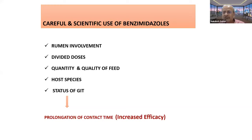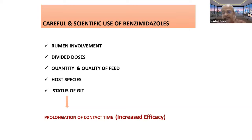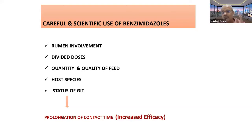Regarding host species: our natural tendency is to translate whatever is prescribed for sheep directly to goats. But in goats, hepatic activity is high and digestive transit time is less — ingesta moves faster compared to sheep. When ingesta moves faster, contact time reduces and efficacy reduces. Therefore, give one additional portion of the dose — for example, if 125 mg day one and 125 mg day two for sheep, give 125 mg on a third day as well for goats — because the ingesta is moving faster.